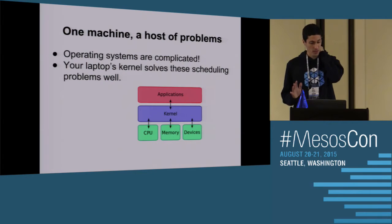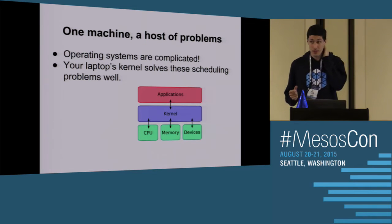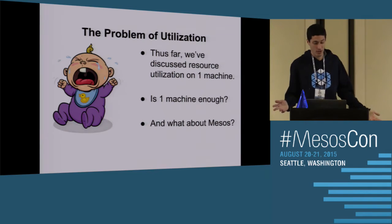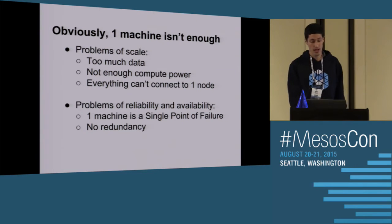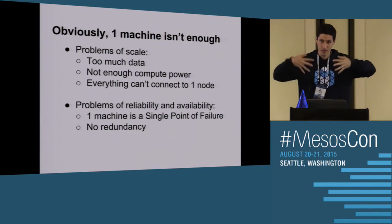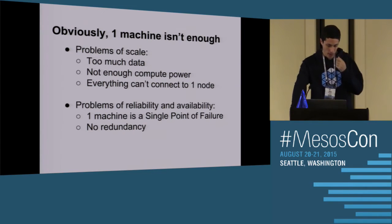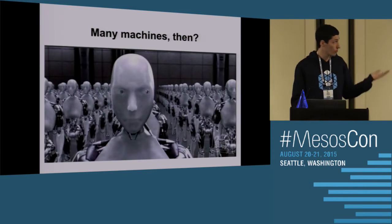So far, all of this has been talking about one machine. One machine has a host of problems and operating systems are complicated. Your laptop's kernel is designed to solve these problems very well. But why don't we just all have one machine? Obviously one machine isn't enough — problems of scale mean too much data, not enough compute power, you can't have 50,000 clients connecting to one database. Reliability and availability are also problems: single points of failure and lack of redundancy. So on to many machines.